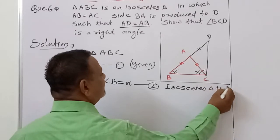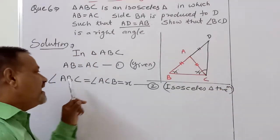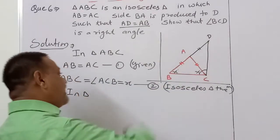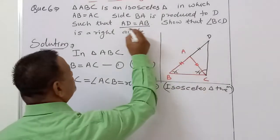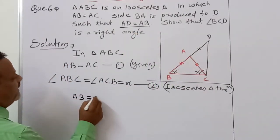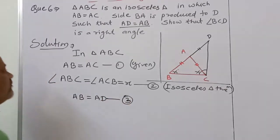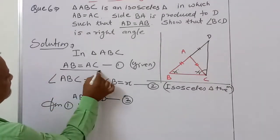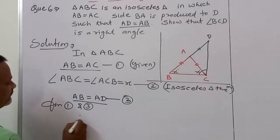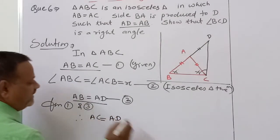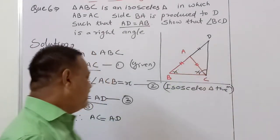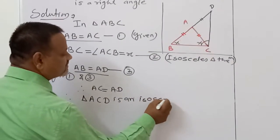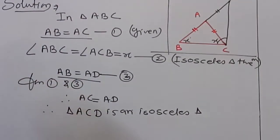By the isosceles triangle theorem, if two sides are equal then the angles opposite to them are equal. Also, the second given condition is AB equals AD — equation number 3. Now from equations 1 and 3, we get AC equals AD. Therefore triangle ACD is an isosceles triangle.